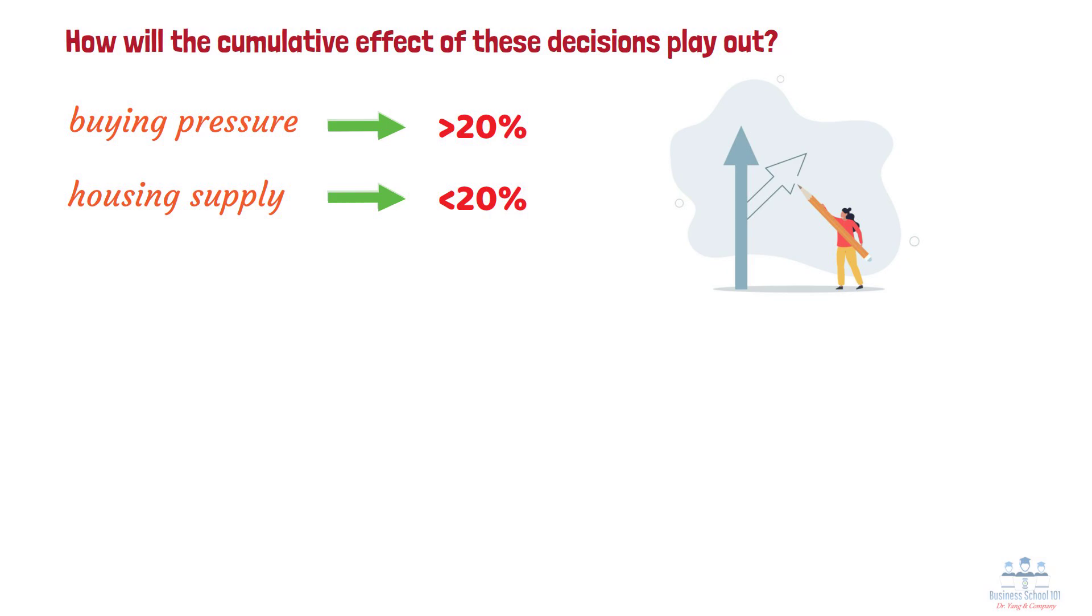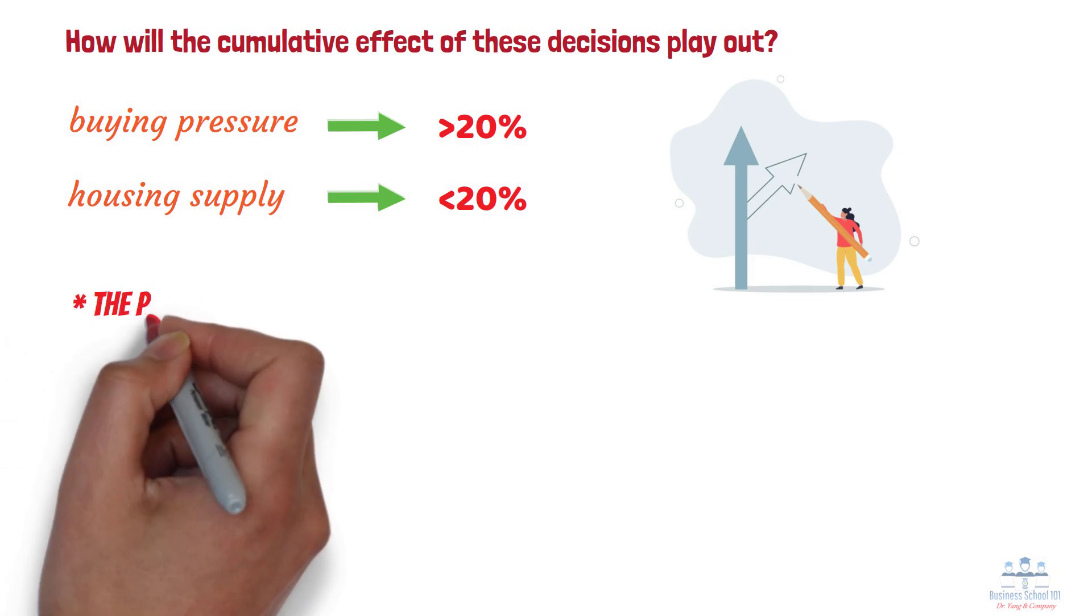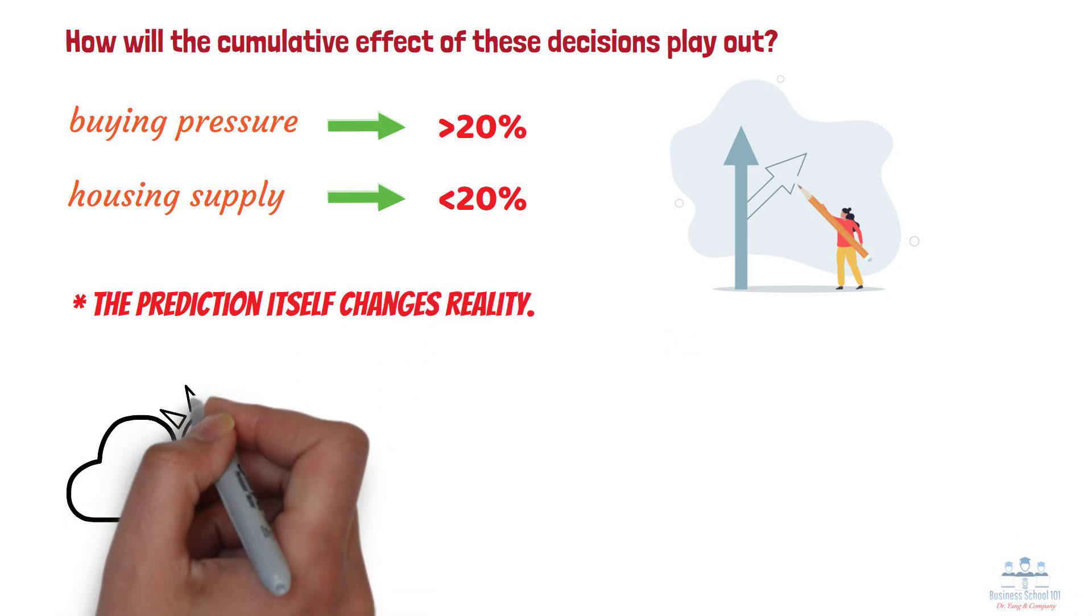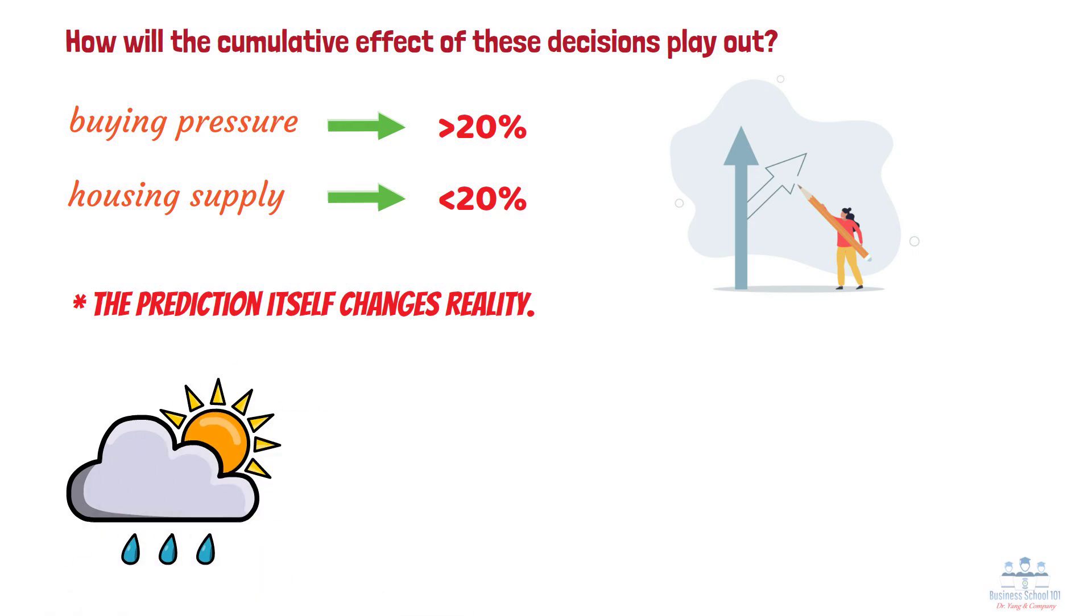Economic predictions are fascinating in this way—the prediction itself changes reality. This is entirely different from weather forecasting. If a weather report predicts rain tomorrow, clouds won't change their minds upon hearing the forecast.